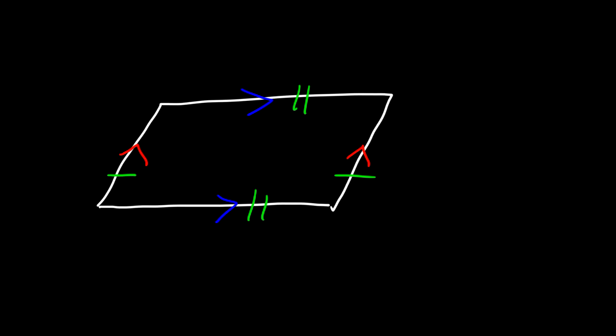The next shape that you need to be familiar with is the parallelogram. In the parallelogram these two lines are parallel and these two lines are also parallel. In addition to being parallel the opposite sides are congruent. So those sides are congruent and these two sides are congruent as well. That's the parallelogram. Keyword parallel. Opposite sides are parallel to each other.